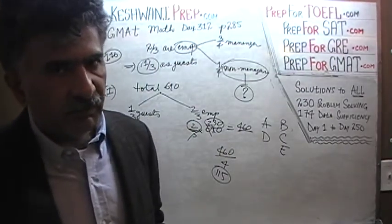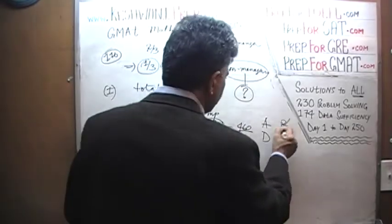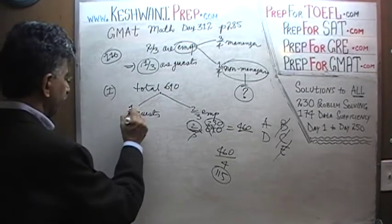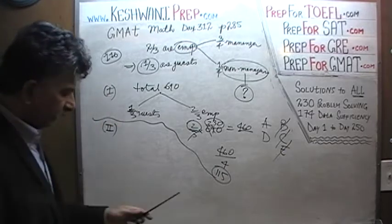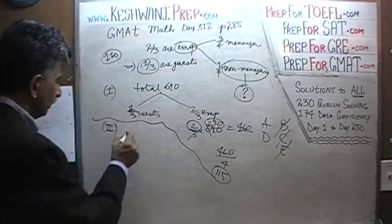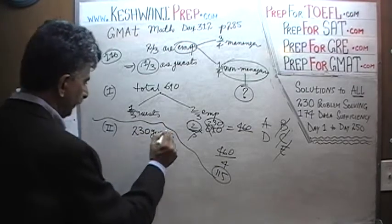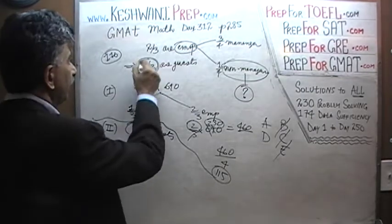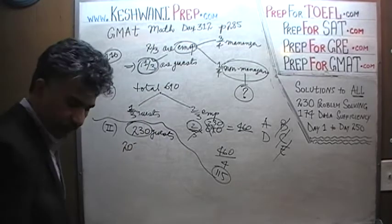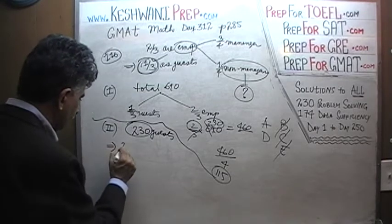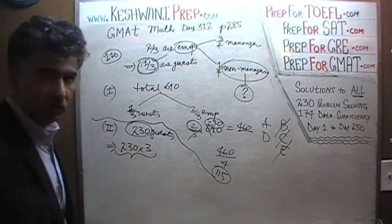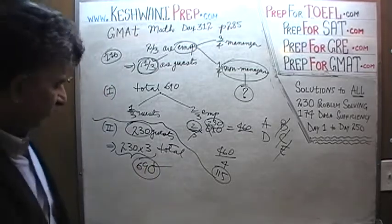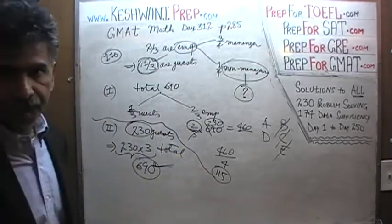Now that we established the first statement does the job, the answer cannot be B, C, or E — it would have to be A or D. In the second statement, they tell us that 230 of them are guests. If 230 are guests and we know guests are one-third, that means 230 times 3 is the total, which is 690. Once we know the total, the rest of the story is the same as before.